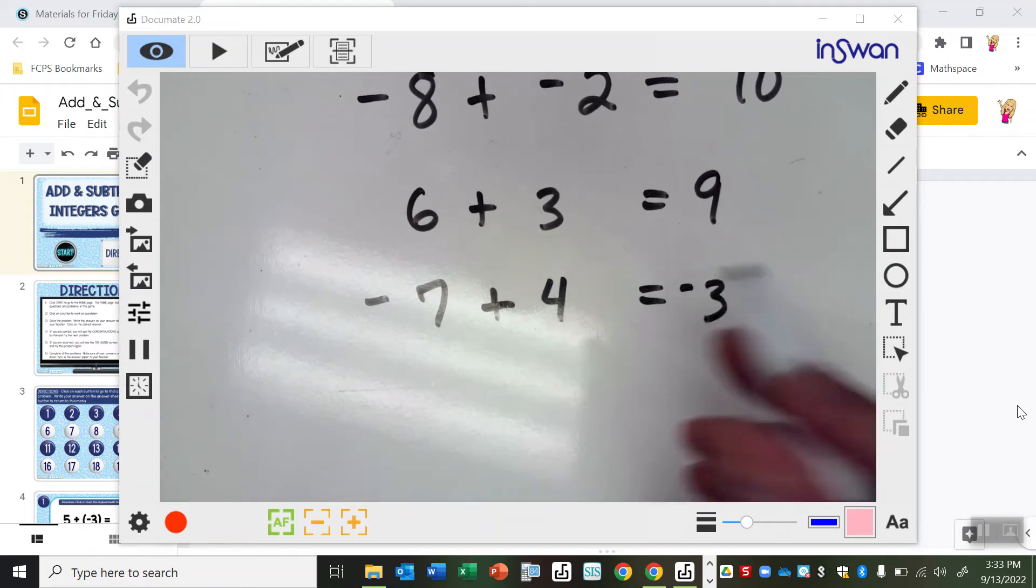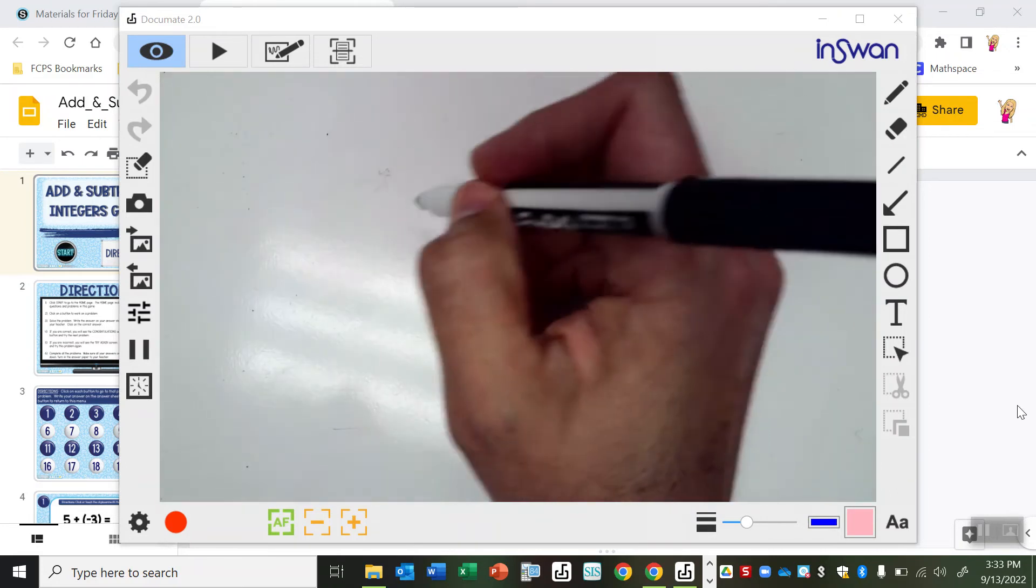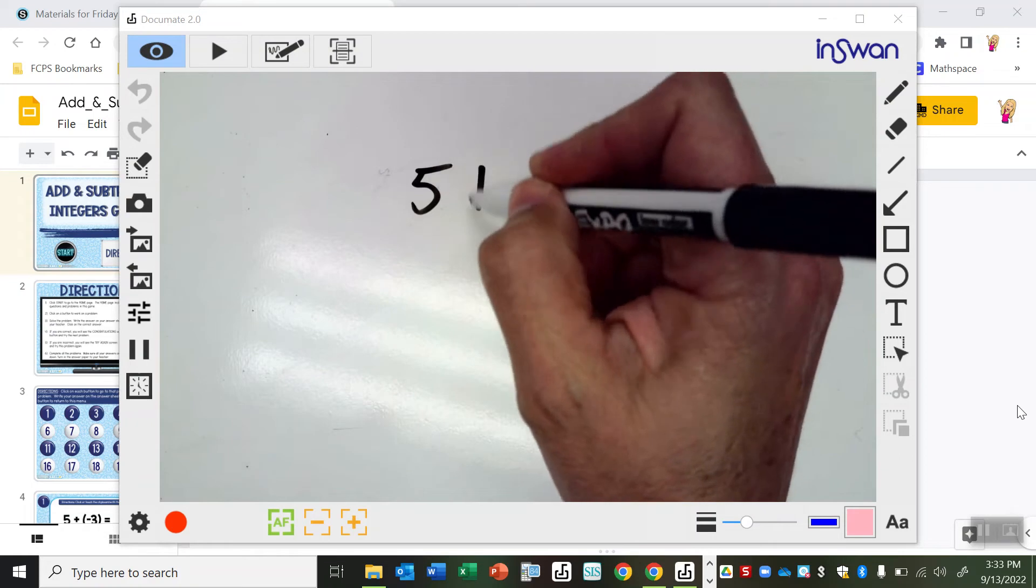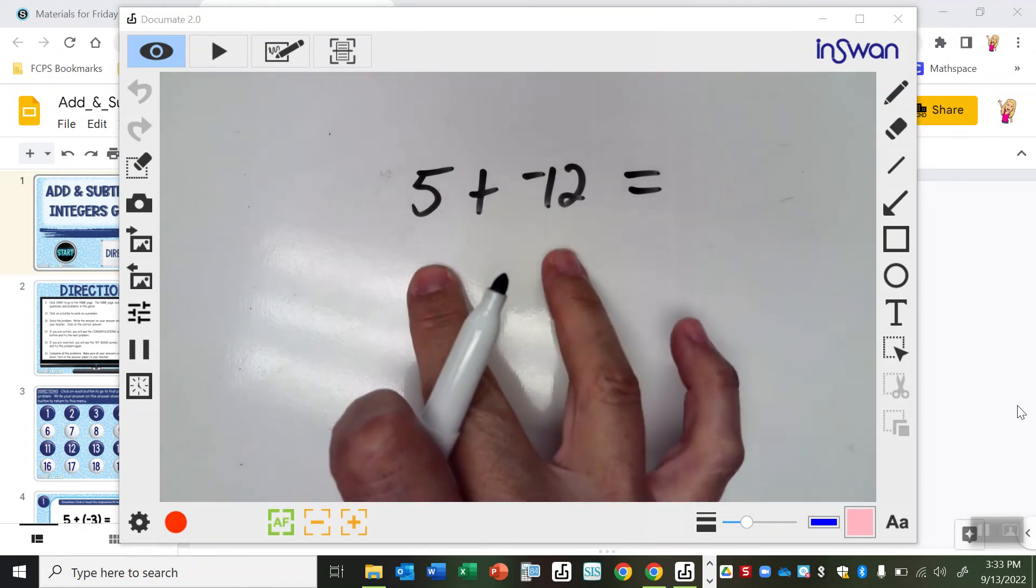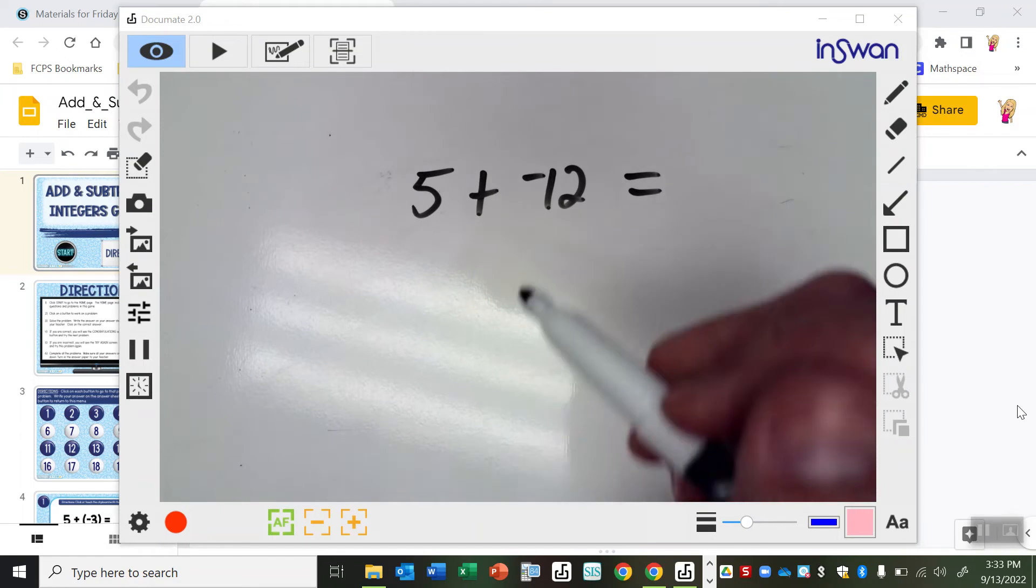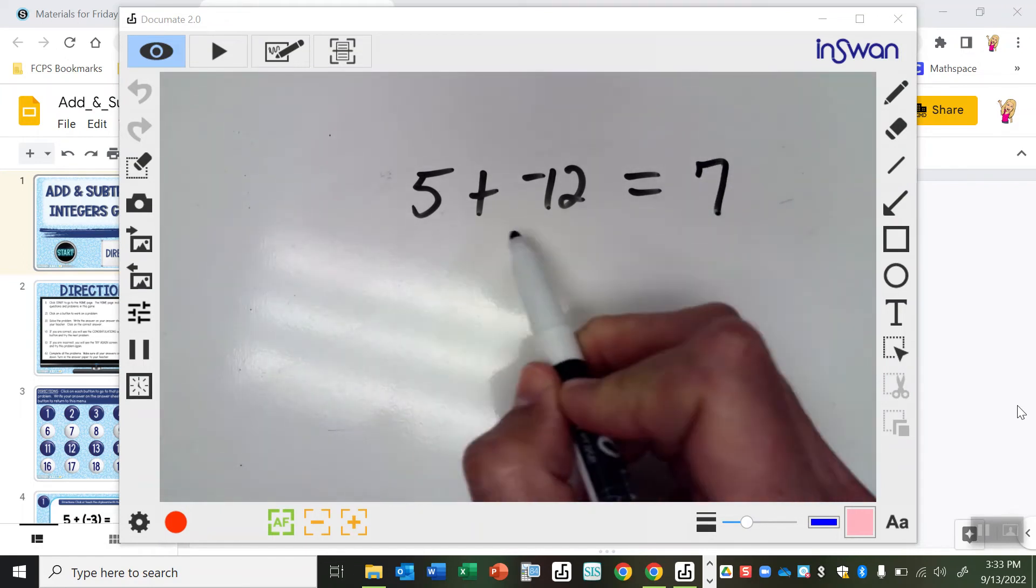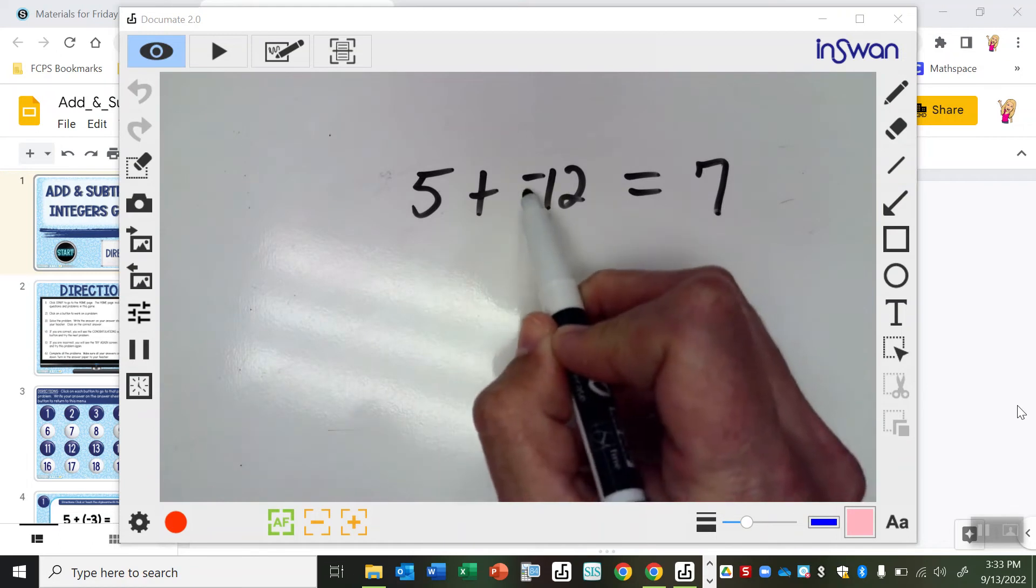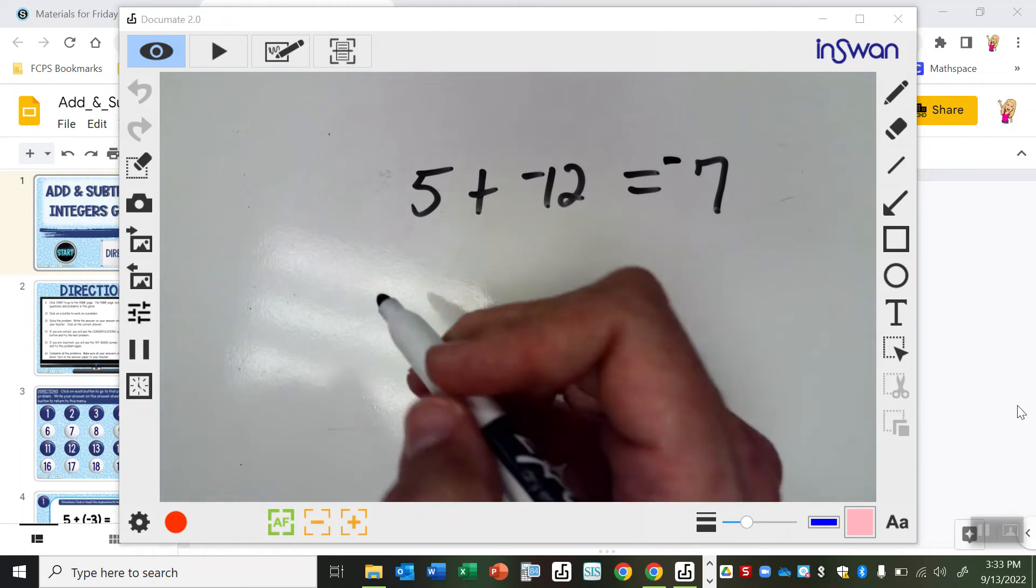So let's do like 5 plus negative 12. So 5 plus negative 12. These are different signs, so I'm going to kind of subtract them in my mind. 12 minus 5 is 7. And which one is bigger? 12 or 5? I'm not including the negative. 12 or 5? 12 is bigger, so I'm going to keep his sign.